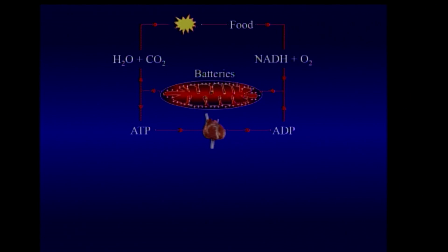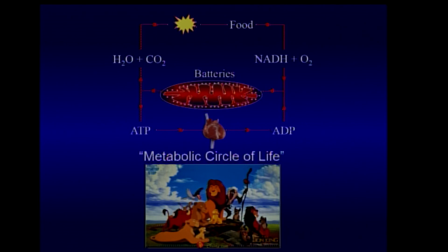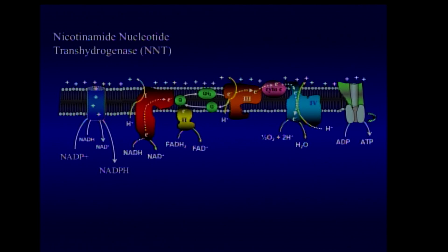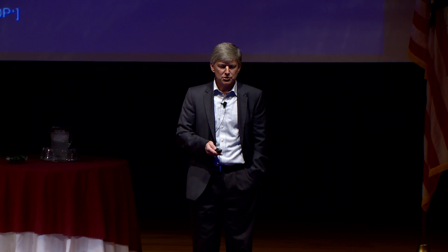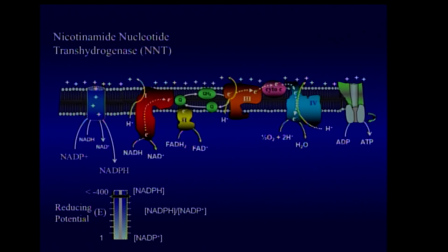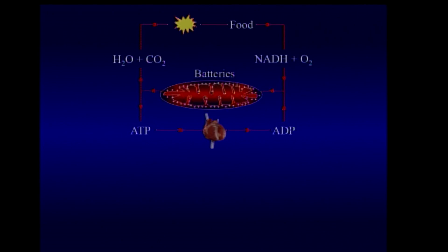This is the classic figure of the energy cycle of life. To paraphrase the great Mufasa, this completes the metabolic circle of life. There's one more component — a protein known as nicotinamide nucleotide transhydrogenase, which uses the membrane potential to drive the production of NADPH, generating an extremely high level. That ratio of NADPH to NADP serves as a generator to distribute electrons.